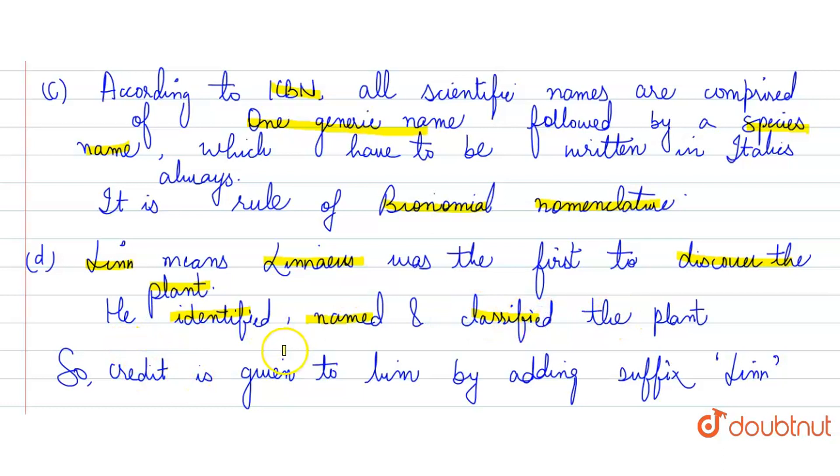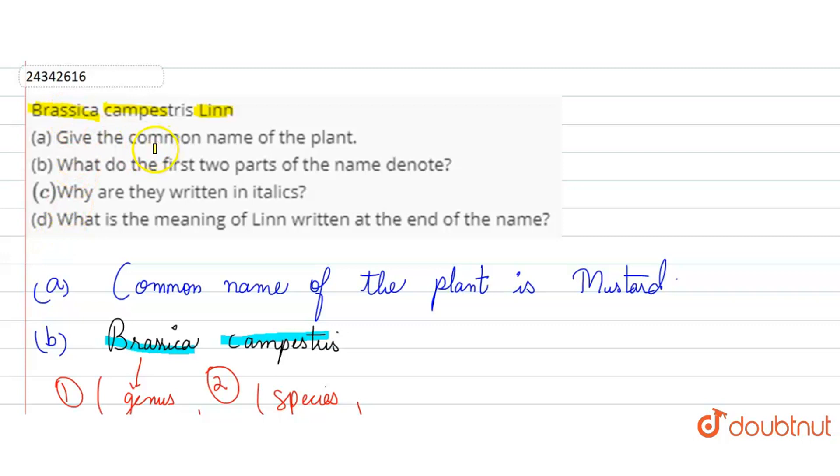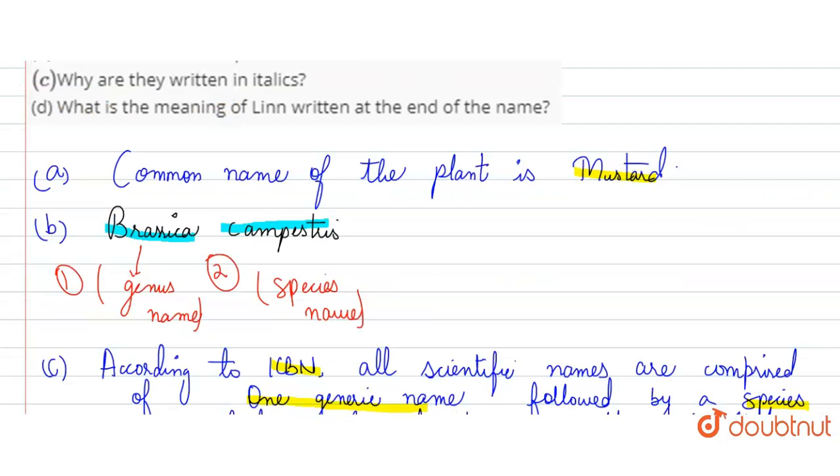So, let's discuss our answers again. In part A, give the common name of the plant. Mustard's scientific name is Brassica campestris. So, the common name is Mustard. Part B was, what do the first two parts of the name denote? First Brassica denotes genus, and campestris denotes species.